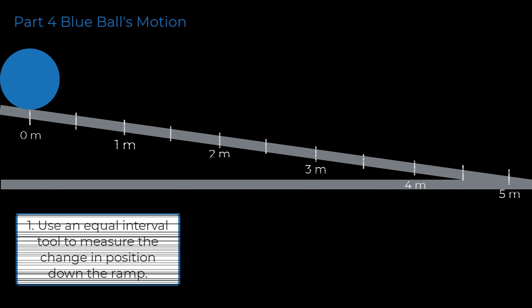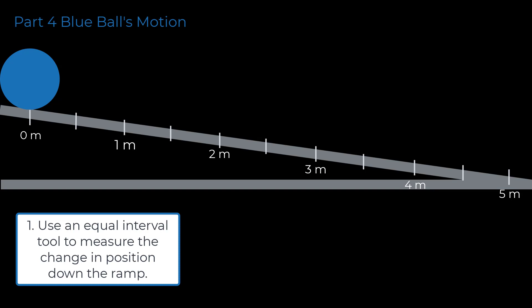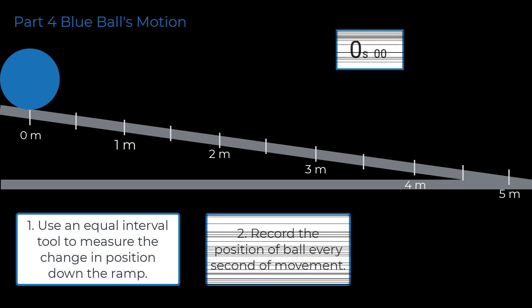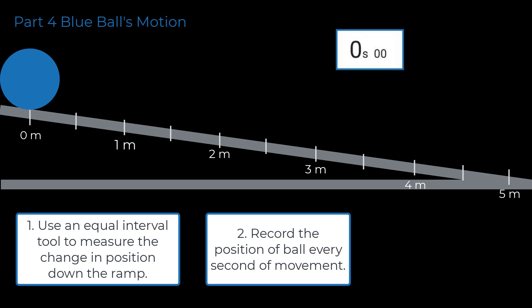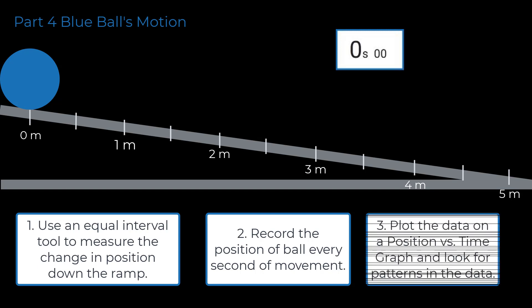To record the motion of the blue ball: one, use an equal-interval tool to measure the change in position of the ball down the ramp; two, record the position of the ball every second of movement; three, plot the data on a position versus time graph and look for patterns in the data. Pause the video now and complete your new model. Resume after completing the model of the blue ball rolling down the inclined plane.